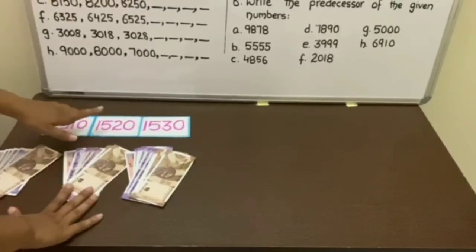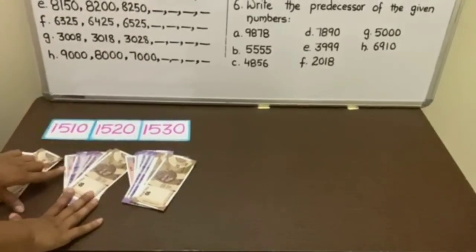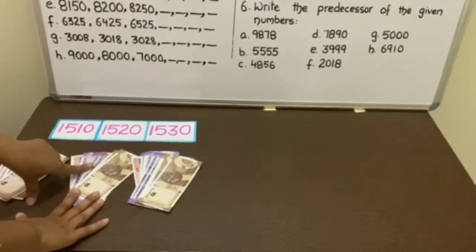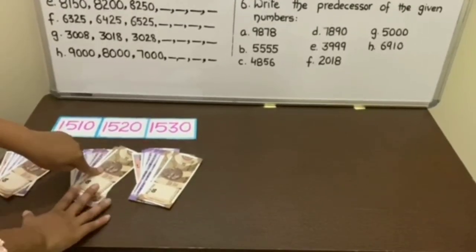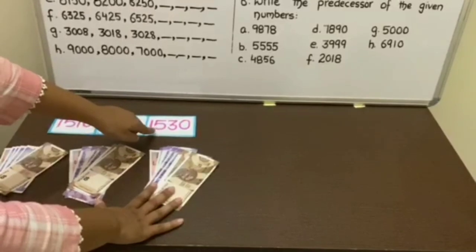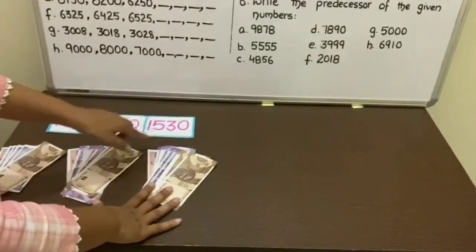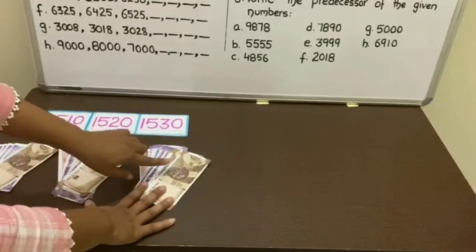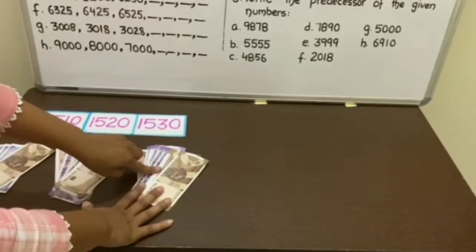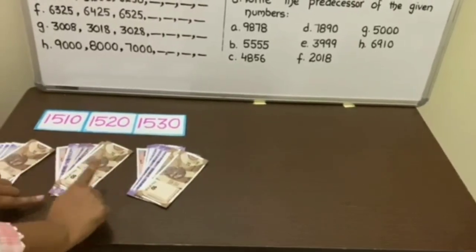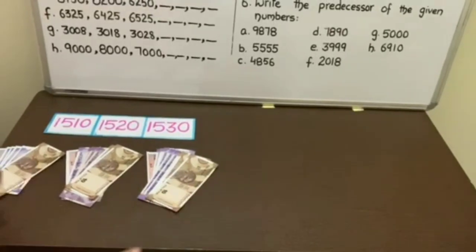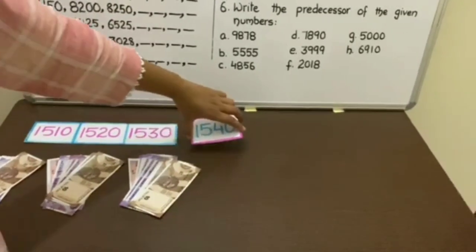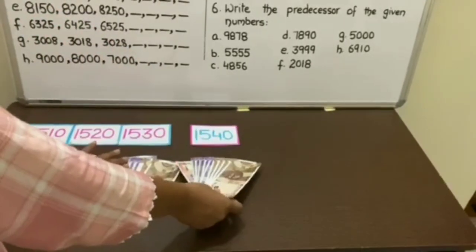Next is 1520. Here it is 1 note of 1000, 5 of 100, and 2 of 20. Next is 1530, and notes are 1530. We have seen that 1 note of 10 rupees is increasing. So our next number will be 1540.